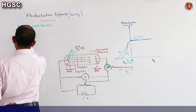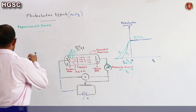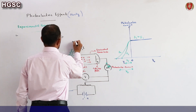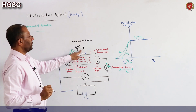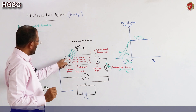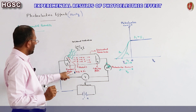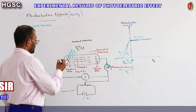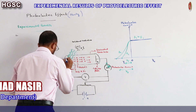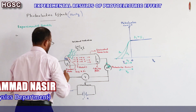Experimental results. First result — these are the incident radiations of frequency F and intensity I. Here is the emitter plate whose threshold frequency is F0.